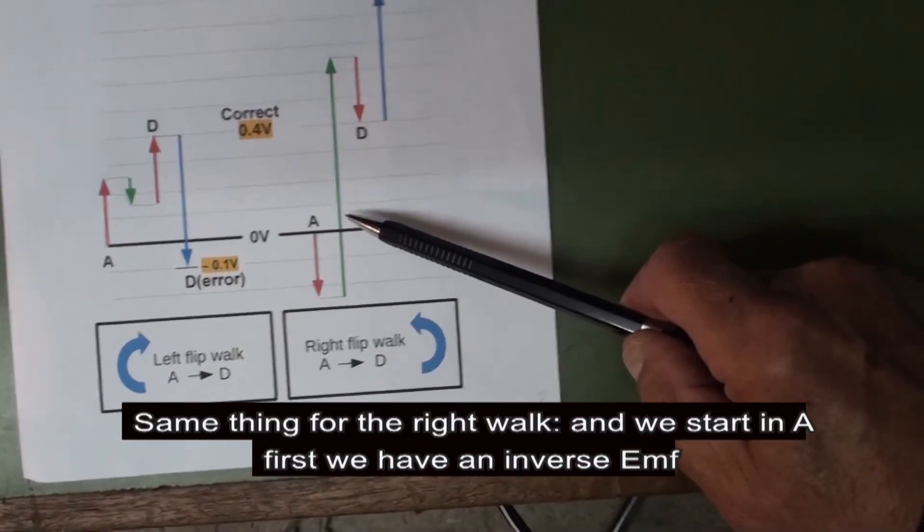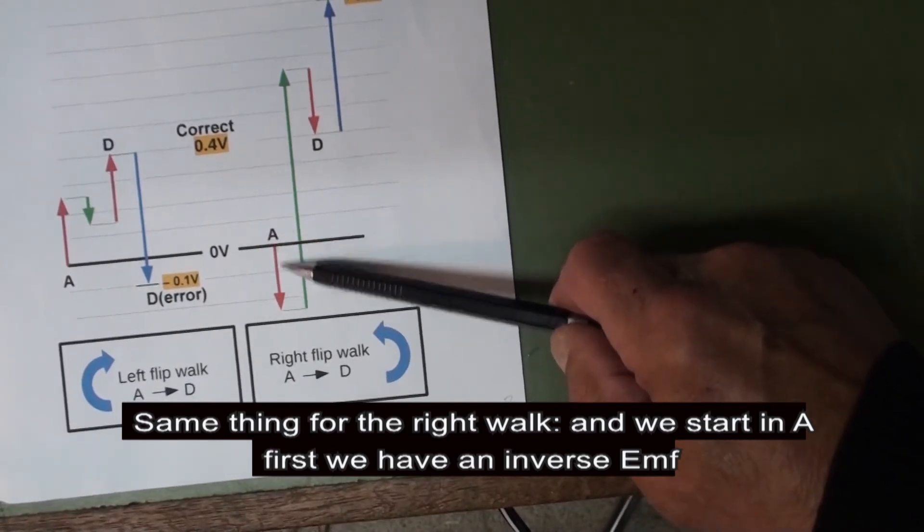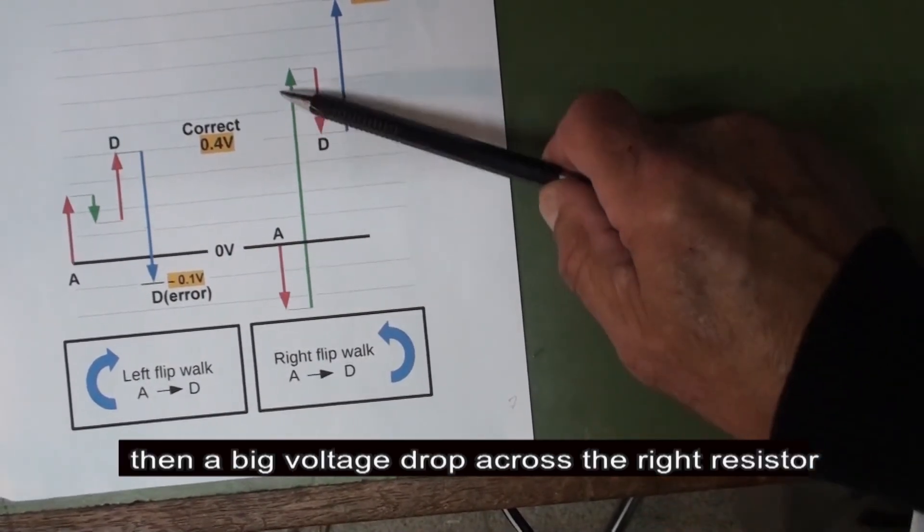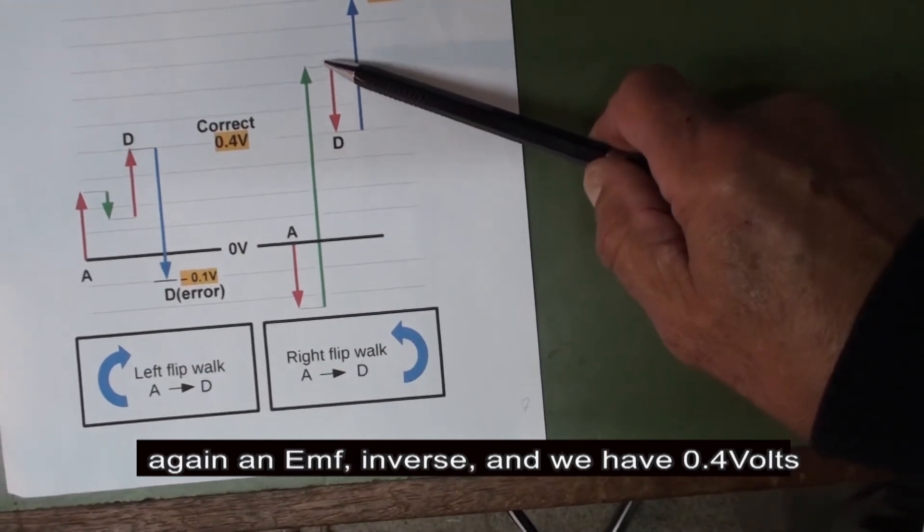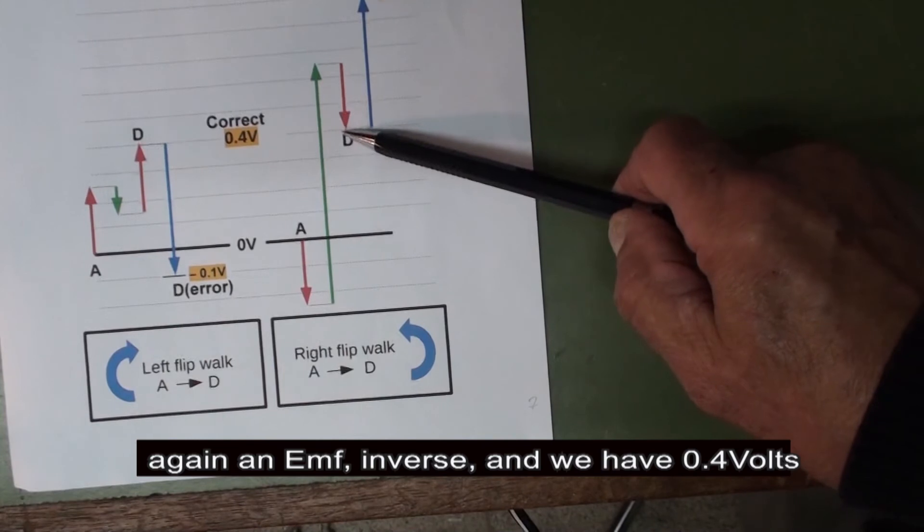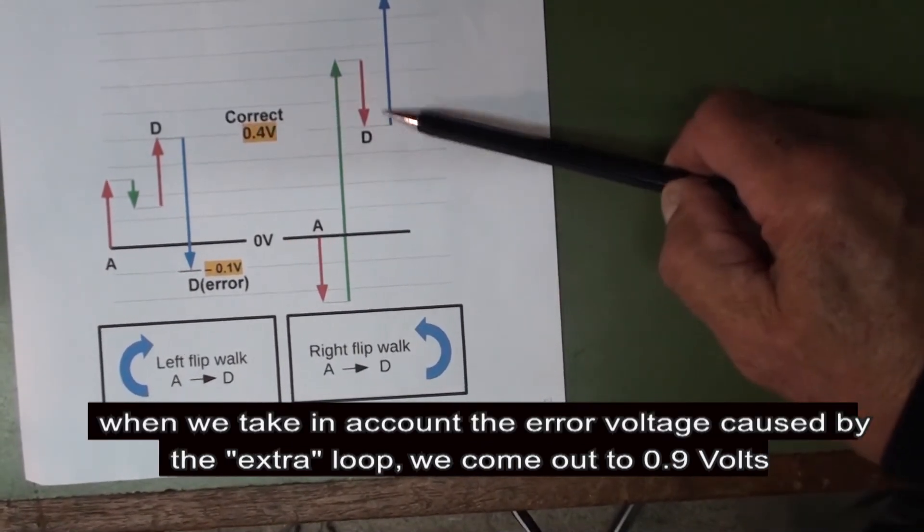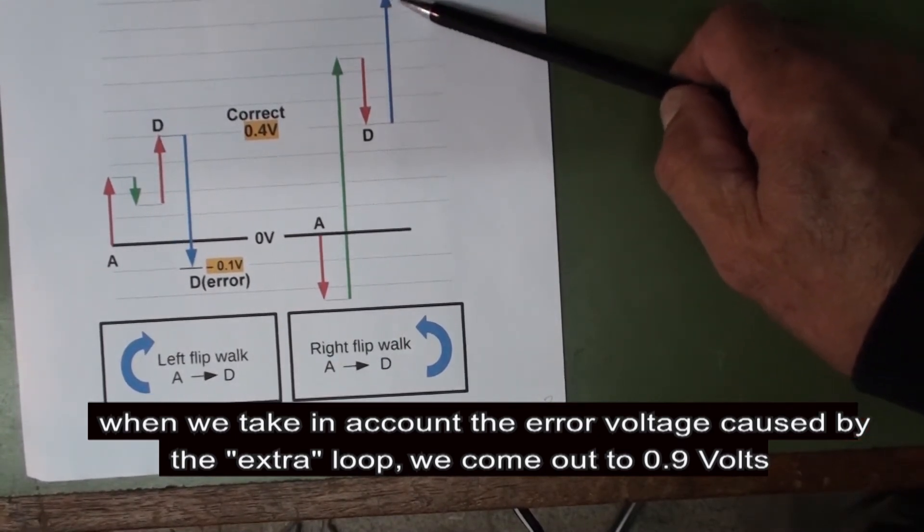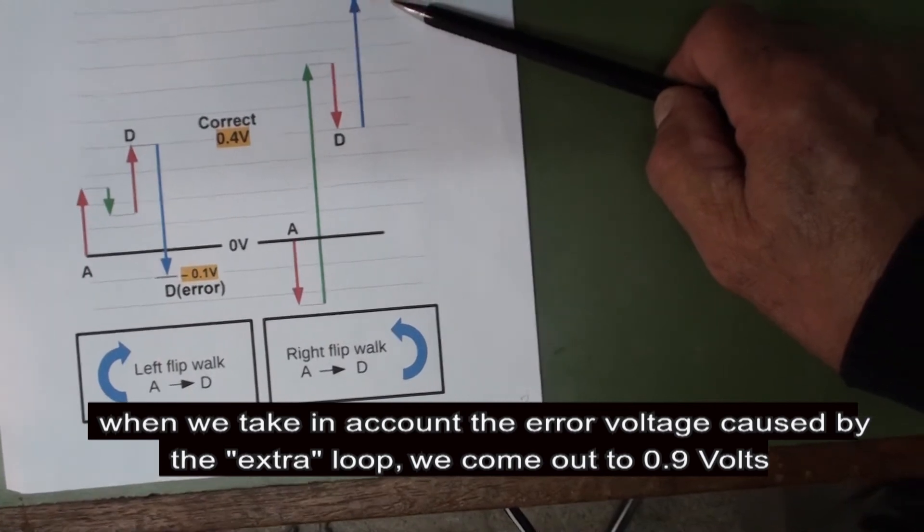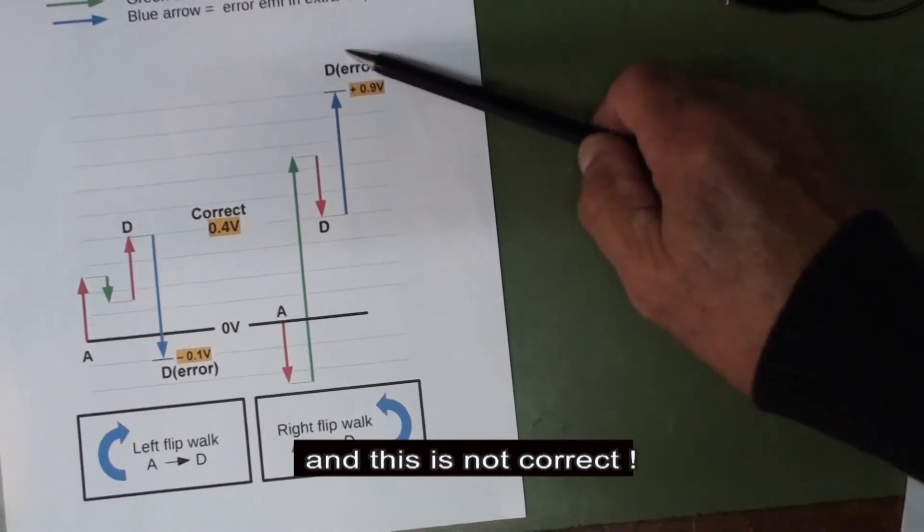Same thing for the right loop. When we start in E, first we have an inverse EMF, then a big voltage drop across the right resistor, again an EMF inverse, and we have 0.4 volts. When we take into account the error voltage caused by the extra loop, we come out to 0.9 volts. This is not correct.